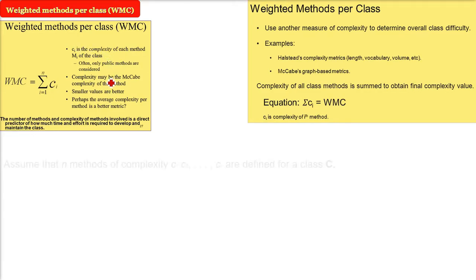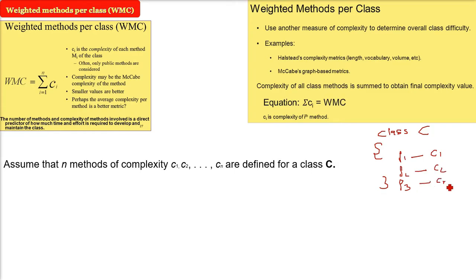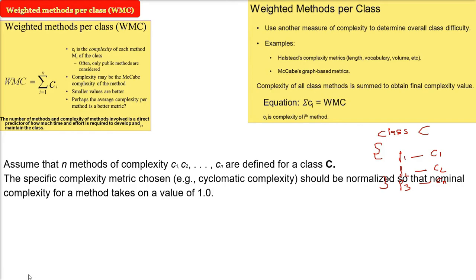Weighted methods per class, WMC. Now what does it mean? Just assume that we have a class C and we have say n methods in this class, and these n methods have complexity C1, C2 till Cn. So a class we have defined has certain functions and each of them have corresponding complexity. Now this complexity can be any complexity, for example you assume it to be cyclomatic complexity. You need to normalize so that the nominal complexity for a method takes on a value of 1.0.